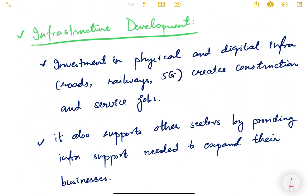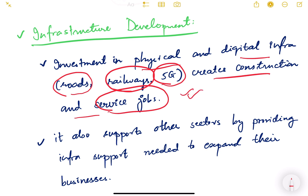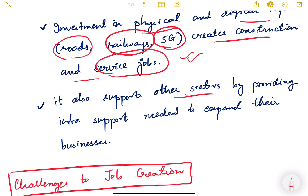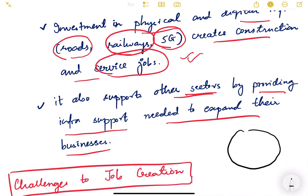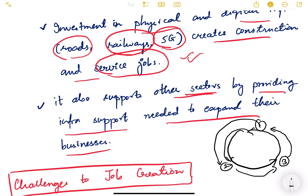The next driver is infrastructure development. Investment in physical and digital infrastructure like roads, railways, and 5G creates construction and service jobs. It also supports other sectors by providing the infrastructure support needed for businesses to expand, which in turn generates more jobs. In the economy there is always a cycle — one thing affects another, and this is also known as the multiplier effect, where the ripple effect goes on.